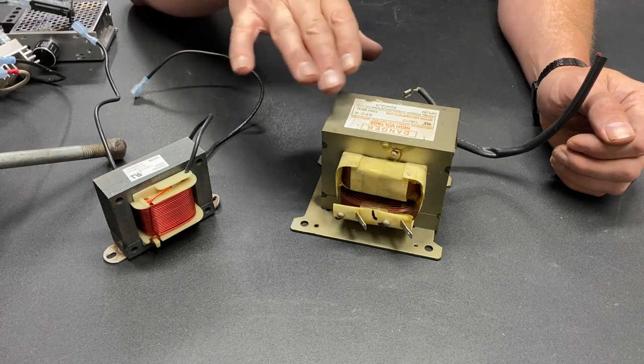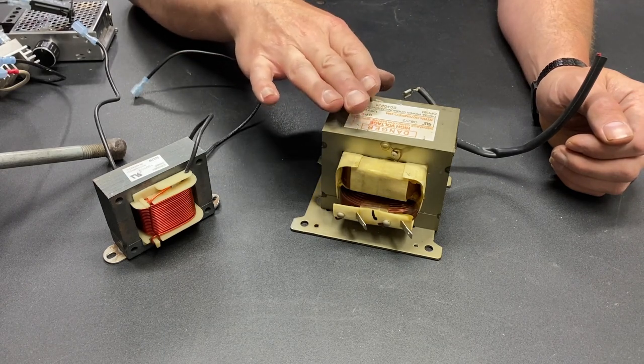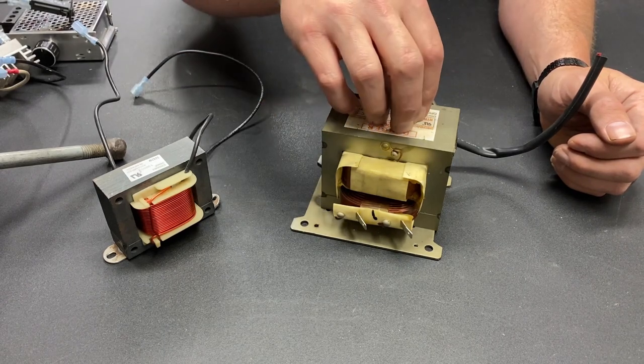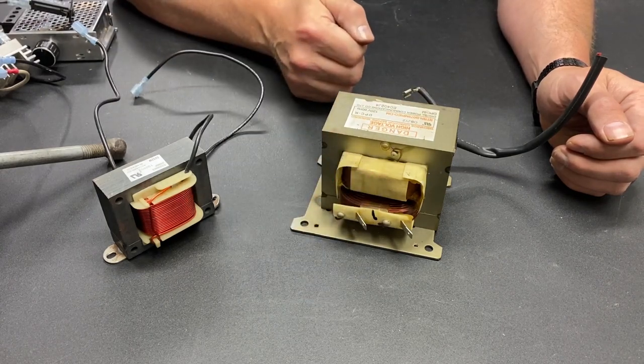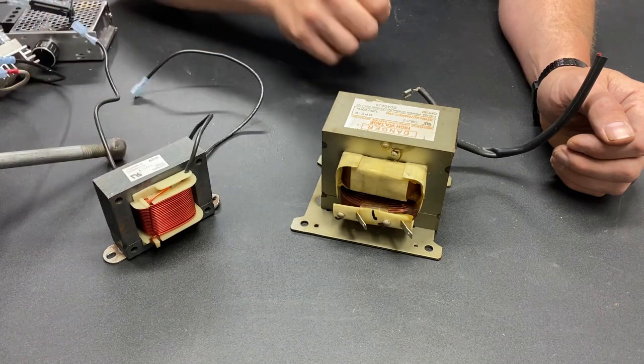What we want to do is put a heavy gauge wire, preferably stranded, in this body, a single coil instead of a double coil like this transformer, and hopefully create this.